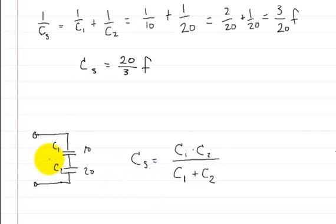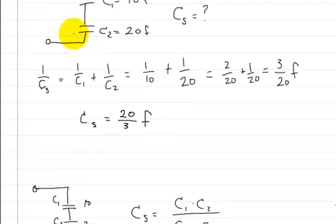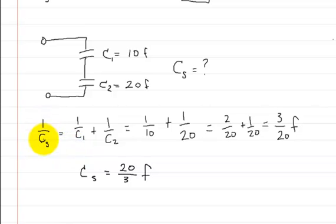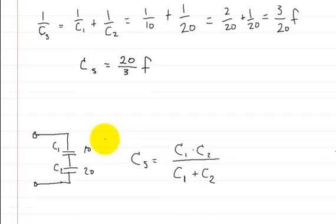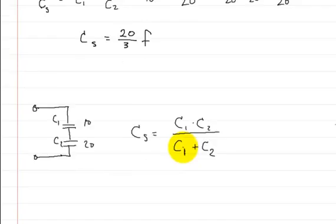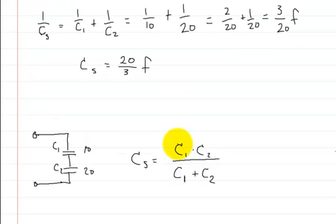So you could use this formula, the 1 over Cs is equal to 1 over C1 plus 1 over C2. But you could also use this formula right here, which you use only when you're working with two capacitors in series. So if we wanted to use this formula, we would just plug the values straight away in. And you'd end up with the same answer.